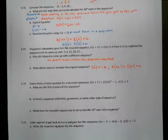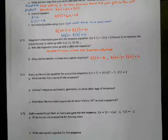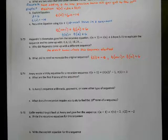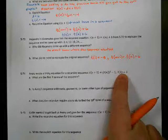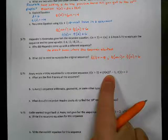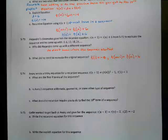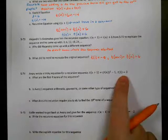Avery is trying to trick her classmates, so she comes up with a really hard recursive equation. She is nice — she does give them the starting term. But she decides to make it hard and really make them work for it. We want to know the first four terms of the sequence. Thank you, Avery, who gave us the first term — we know where to start.